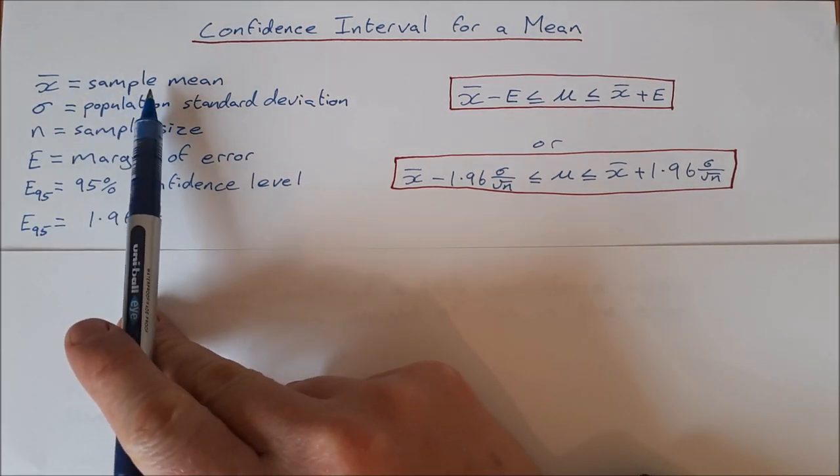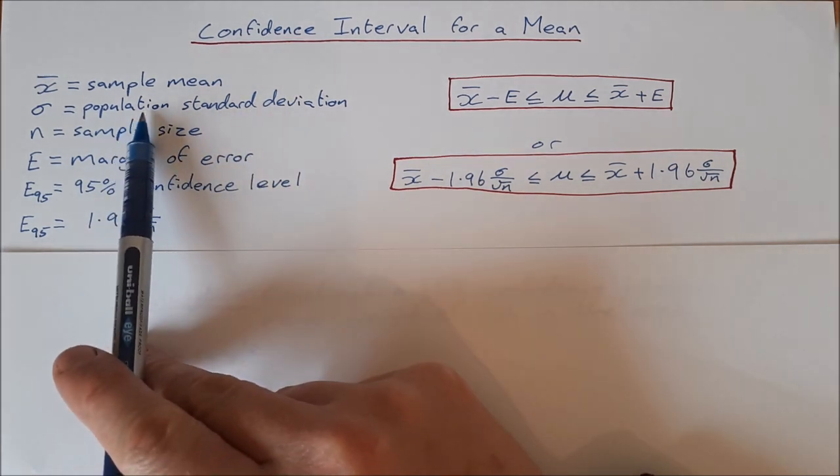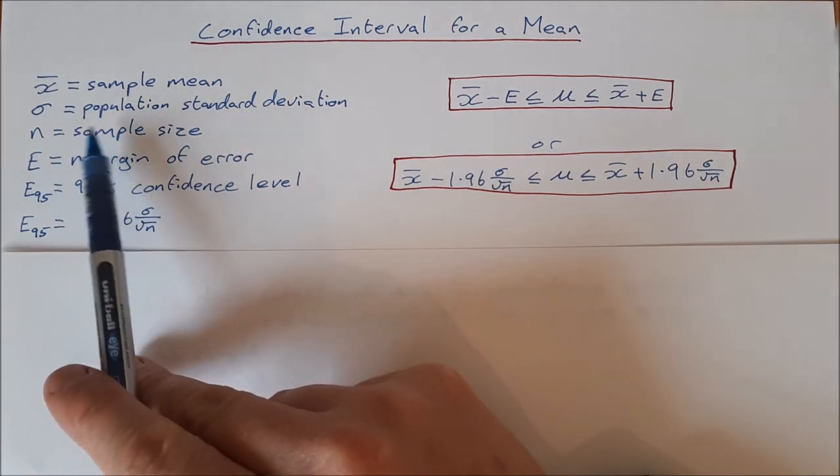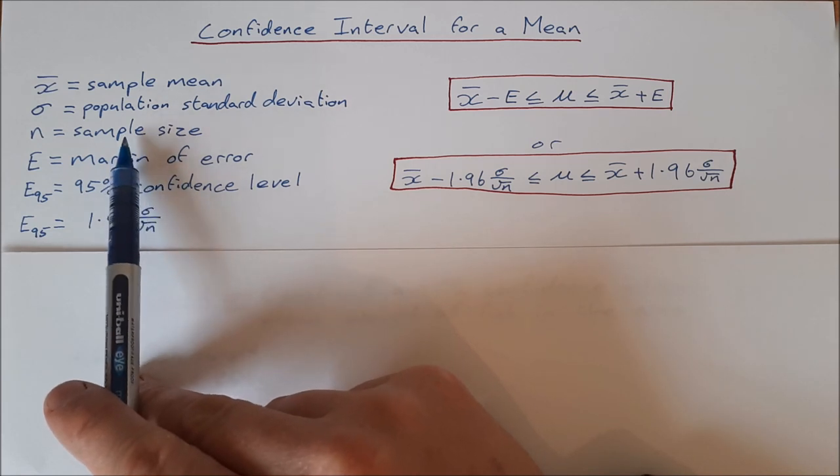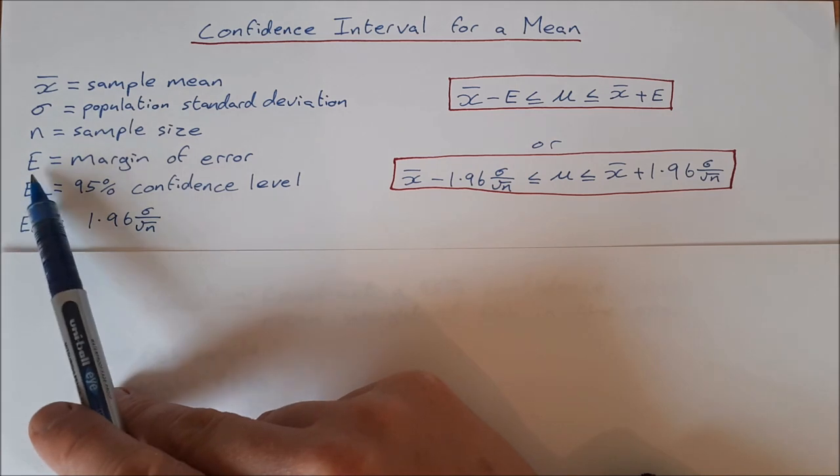σ is the population standard deviation, so you're usually given that as well. n is the sample size, so how many of whatever it is that you have. E is the margin of error.